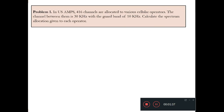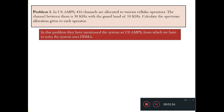Now let's solve a problem. In a US AMPS system, 416 channels are allocated to various cellular operators. The channel bandwidth is 30 kHz with a guard band of 10 kHz. Calculate the spectrum allocation given to each operator. Since the system is AMPS — an analog mobile phone system — the multiple access technique is FDMA, even though it is not explicitly mentioned.